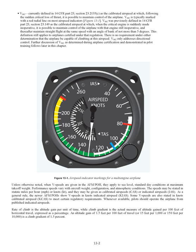VMC, currently defined in 14 CFR Part 23, Section 23.2135(c), is the calibrated airspeed at which, following the sudden critical loss of thrust, it is possible to maintain control of the airplane. VMC is typically marked with a red radial line on most airspeed indicators. VMC was previously defined in 14 CFR Part 23, Section 23.149 as the calibrated airspeed at which, when the critical engine is suddenly made inoperative, it is possible to maintain control with that engine still inoperative and thereafter maintain straight flight at the same speed with an angle of bank of not more than 5 degrees. This definition still applies to airplanes certified under that regulation. There is no requirement under either determination that the airplane be capable of climbing at VMC. VMC only addresses directional control.